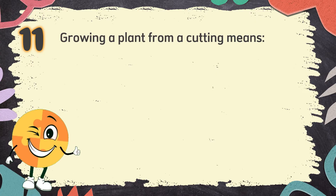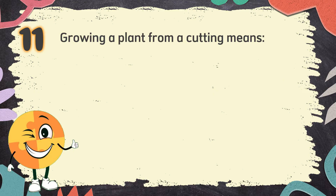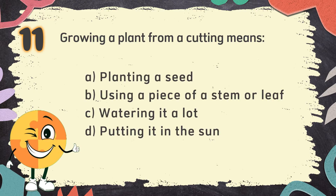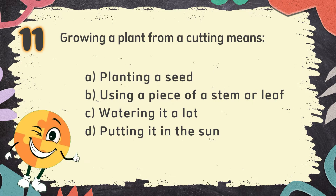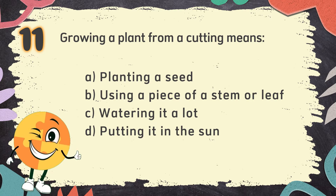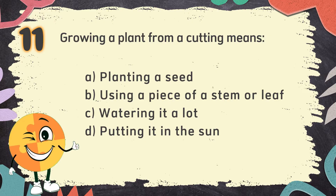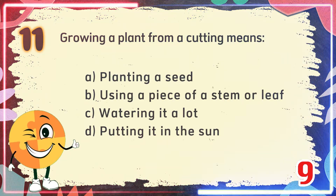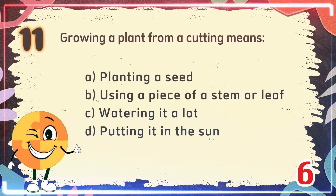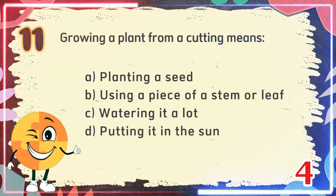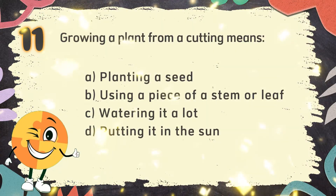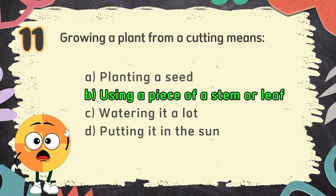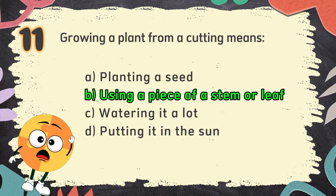Number 11: Growing a plant from a cutting means — The choices are: A. Planting a seed, B. Using a piece of a stem or leaf, C. Watering it a lot, D. Putting it in the sun. The correct answer is B. Using a piece of a stem or leaf.